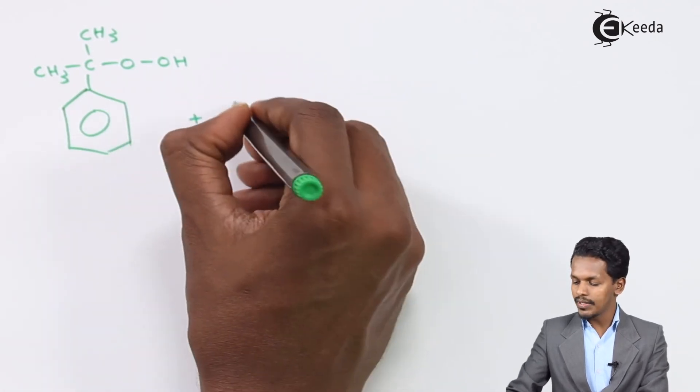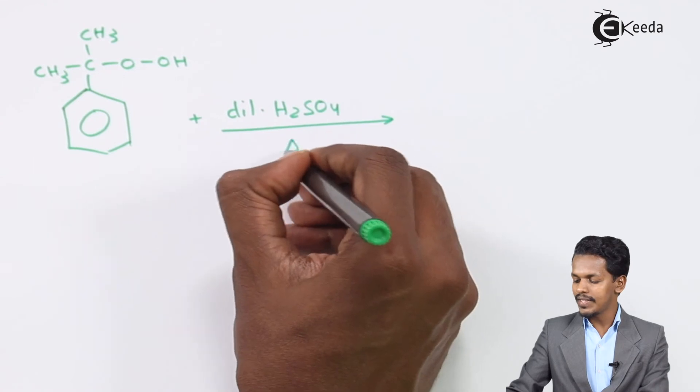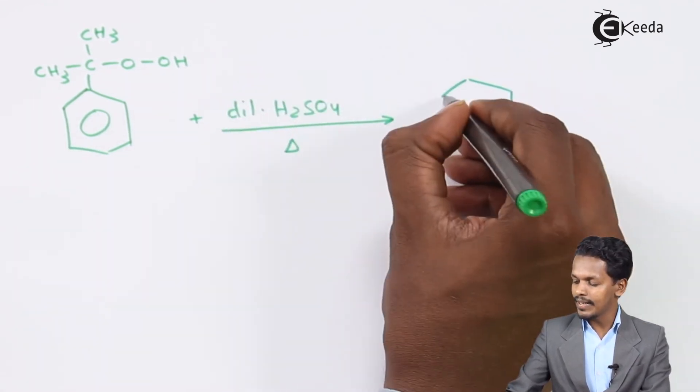This is treated with dilute sulphuric acid. In presence of dilute sulphuric acid, the product that we could obtain is the main product, phenol.